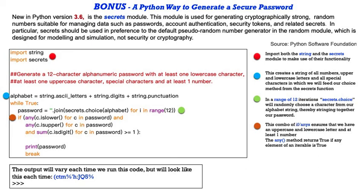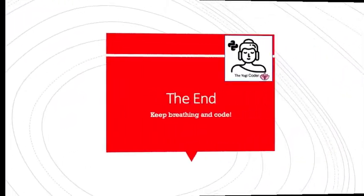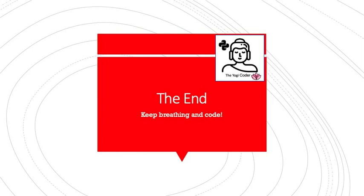Next, we have this if statement with embedded for loops in it. This combo of if any ensures that we have an uppercase and lowercase letter and at least one number. The any method returns true if any element of an interval is true. So we want all these things to be true before we print out our password and then issue our break. Okay? So it's really short and concise, but very powerful code using these two different modules to aid us. The output's going to vary each time we run this code because it's random. It's working off random technology. But for instance, this is the password that got created for me in this particular running of the code.